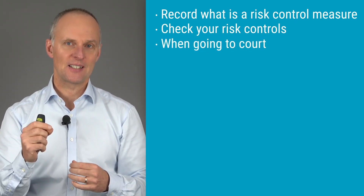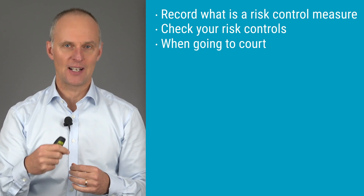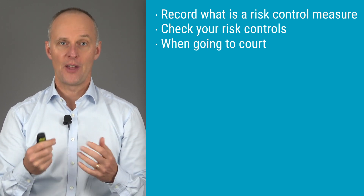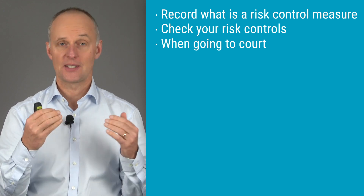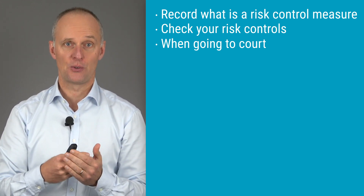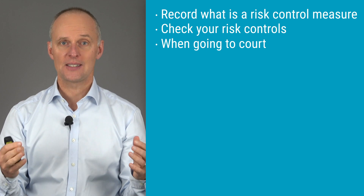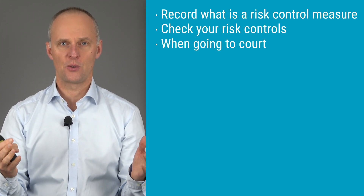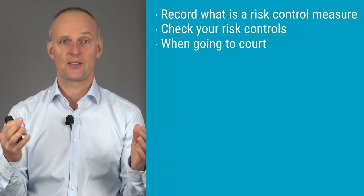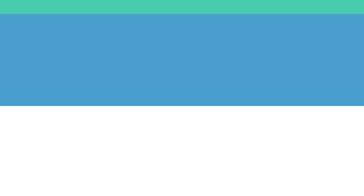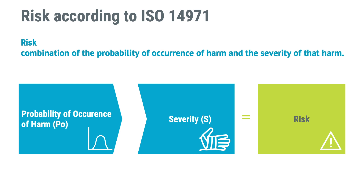Last but not least, if an accident occurs and someone is injured and it leads to a trial, then it is much better to be able to show that you decided to implement insulation of cables, an insulating cover on the device, and an earth connection — as opposed to just taking these risk controls for granted. Before we start looking at estimating risks, let's take a look at what risk is according to ISO 14971. In the ISO 14971 standard, risk is defined as the combination of probability of occurrence of harm and the severity of that harm.